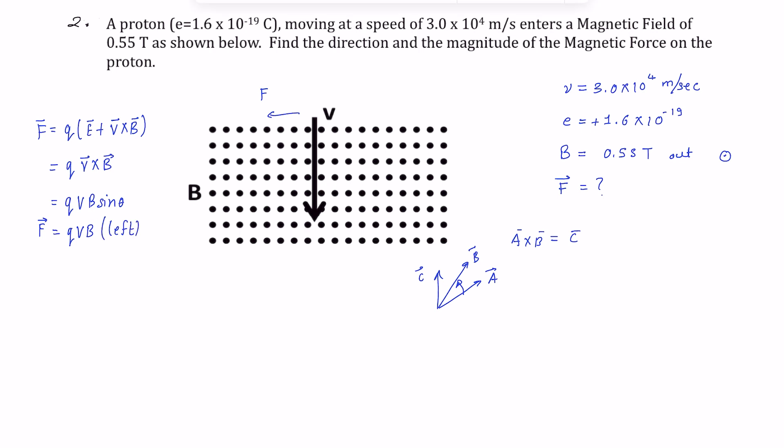And the magnitude will be just Q, that is 1.6 times 10 to the minus 19, times V, that is 3.0 times 10 to the 4, times B. And it is already given in Tesla so you don't have to worry about that. And this will give you an answer in Newtons. And this is 1.6 times 3.0 times 0.55.